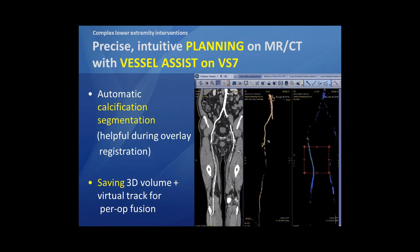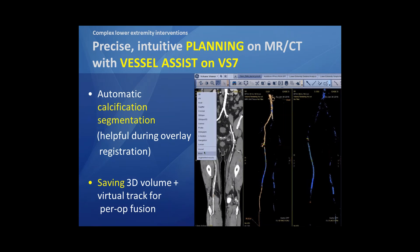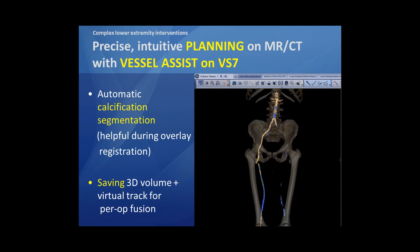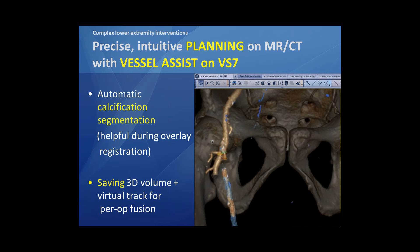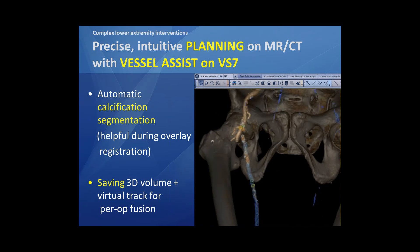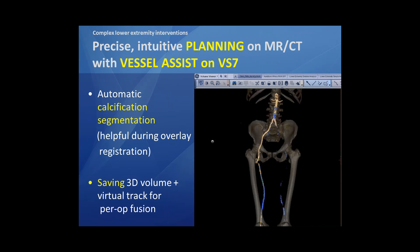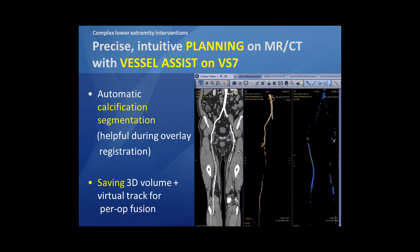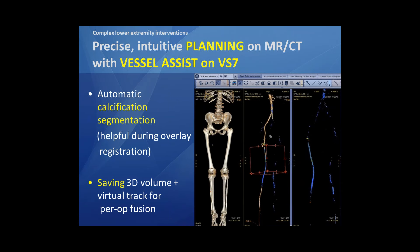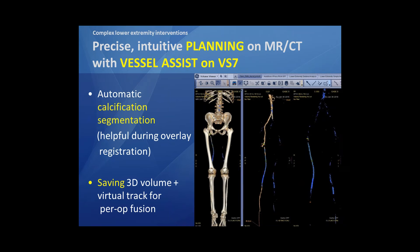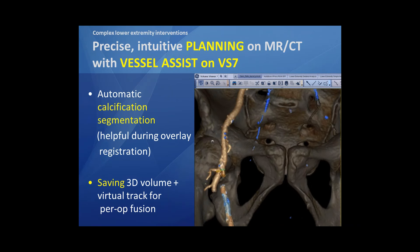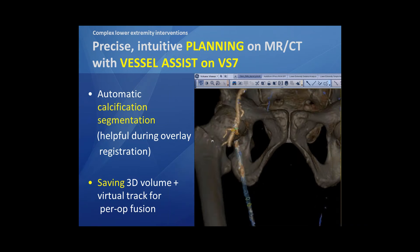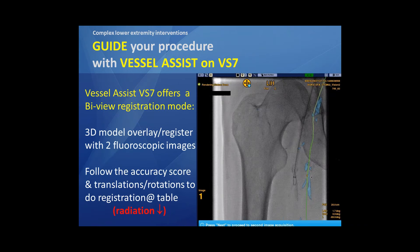Another nice thing is that you can create sub-volumes and also do an automatic calcification segmentation, as you can see here. It can be very helpful during the overlay registration during the procedure. We save all this preparation work — the segmentation of the calcium, the center line registration, and so on — in our workstation. On the day of the procedure we can use it to do our perioperative fusion.